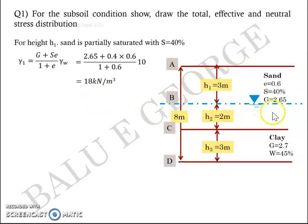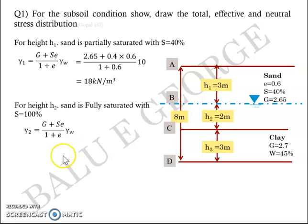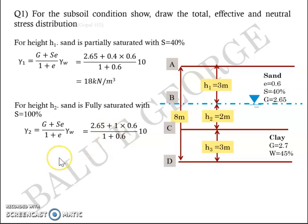To get the unit weight of sand below the water table for height H2 = 2 m, we use the same equation, but now S = 1 (fully saturated). G, e, and γ_W remain the same. Substituting S = 1, we get γ₂ = 20.3 kN/m³. So γ₁ is the bulk unit weight and γ₂ is the saturated unit weight.